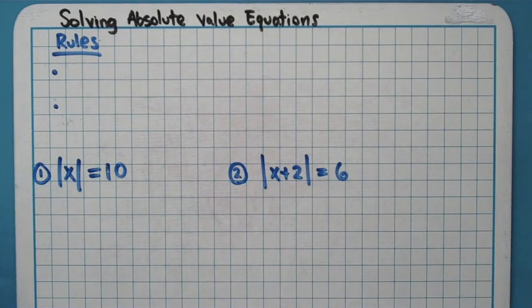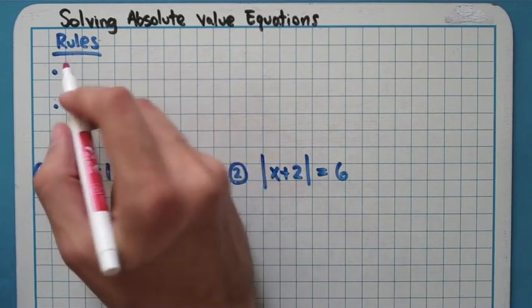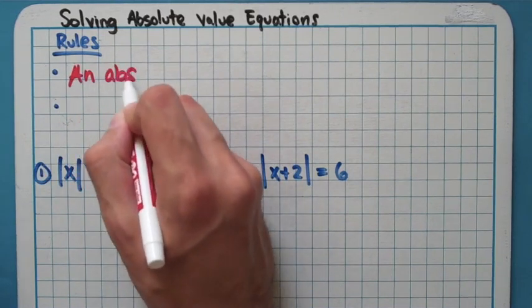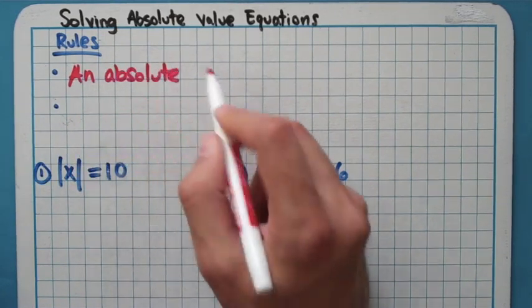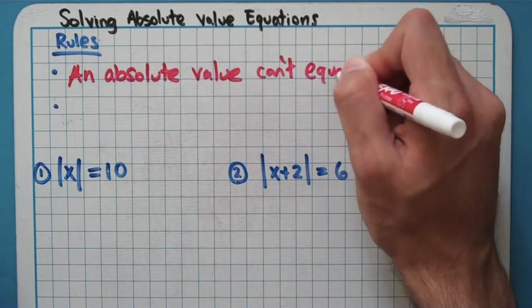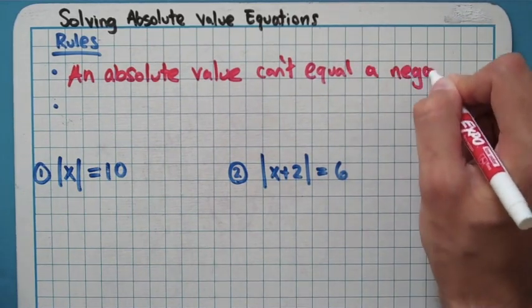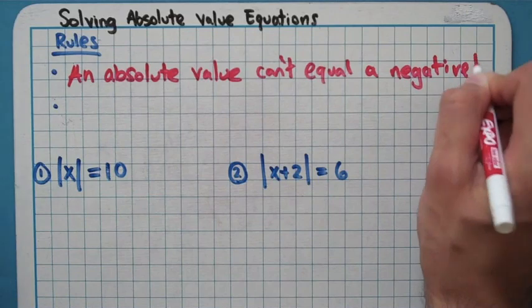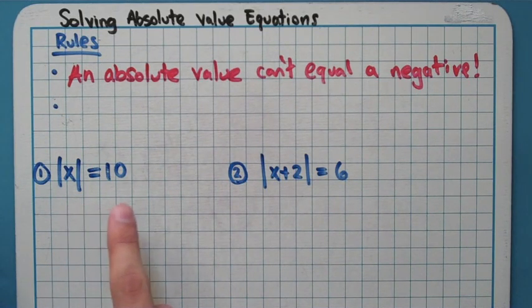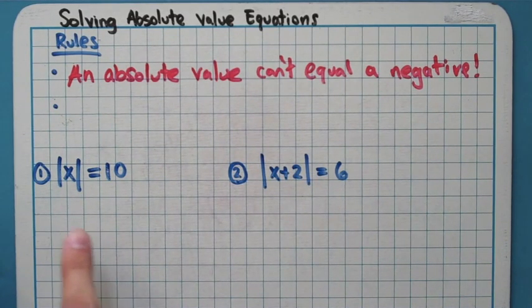There are two real rules you're going to have to keep in mind when doing these problems. The first and probably most important rule: an absolute value cannot equal a negative. That's a really important rule and something people tend to forget. Remember, when you take the absolute value of a number, it spits out a positive answer, so we definitely don't want to see an absolute value equal to a negative number. I'll get to the second rule in a little bit.